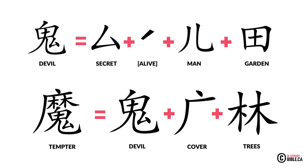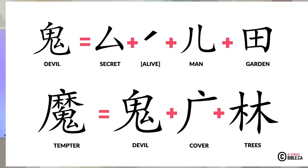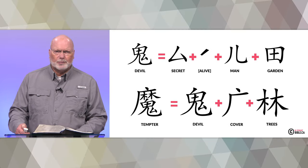Next is the character for 'tempter.' The devil is the one who tempted Eve — we have the idea of secret plus man in the garden and they are alive, and all that together represents the devil. He is very much alive but threatens our lives by what he does. We also have the idea of 'tempter' represented in the characters by the addition of the devil, the trees, and a covering — he is the tempter, another parallel in the Chinese language coinciding with what we read in the Hebrew Bible.